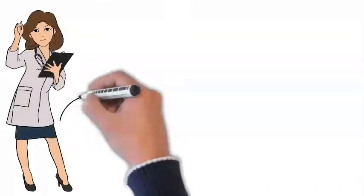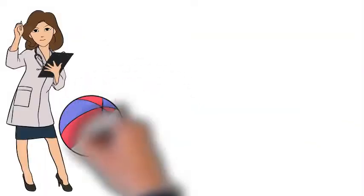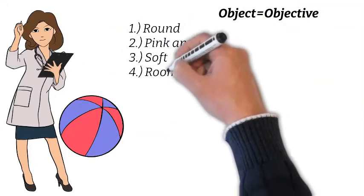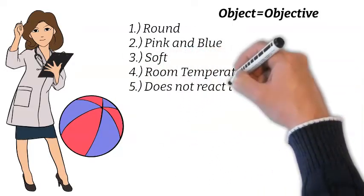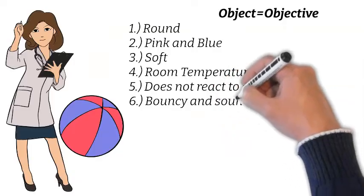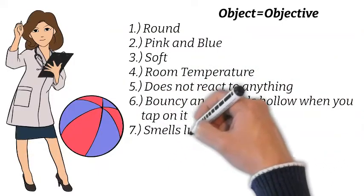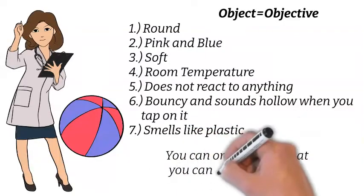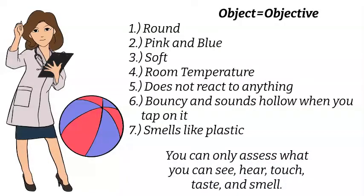When we're gathering this data, we're simply looking at the patient as an object. Take this beach ball, for example. We can certainly collect data about the ball by using our five senses. It's round, it's pink and bluish, soft, room temperature, it doesn't react to anything, it's bouncy, it sounds hollow when you tap on it, and it kind of smells like plastic. You can only assess what you can see, hear, touch, taste, or smell. However, the ball doesn't have feelings — it can't communicate back to us, so the ball can't tell us how it feels. It also helps to think of this ball as an object. Object equals objective.